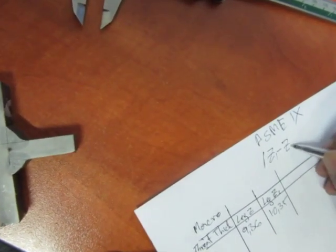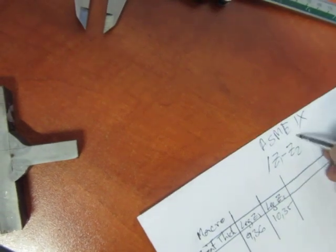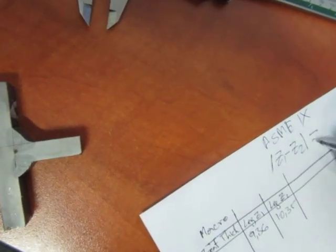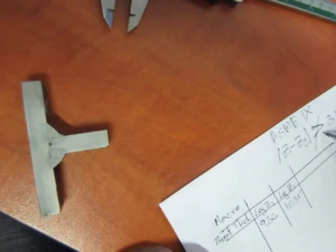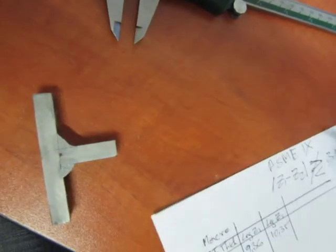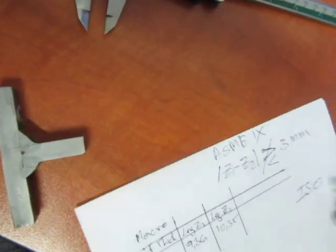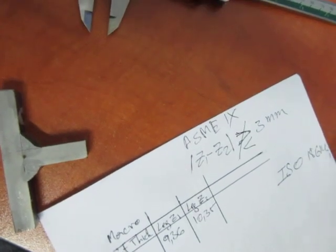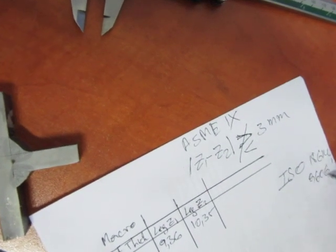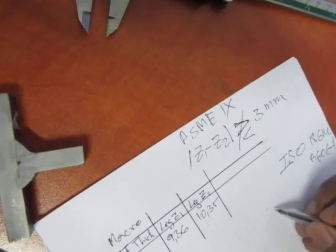The difference between Z1 and Z2 must not be above 3 millimeters. For ISO 15614-1 as well as 9606-1, the difference between the leg lengths must not be above 3 millimeters.